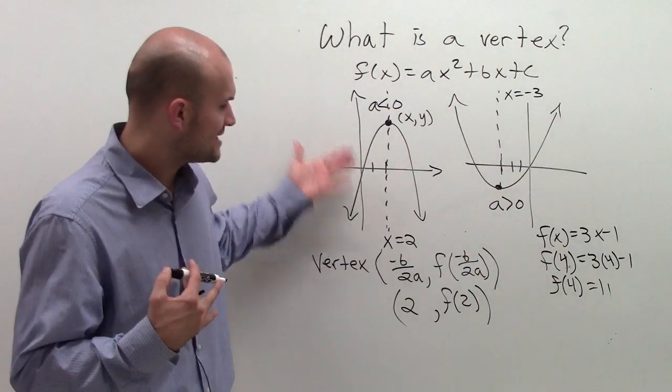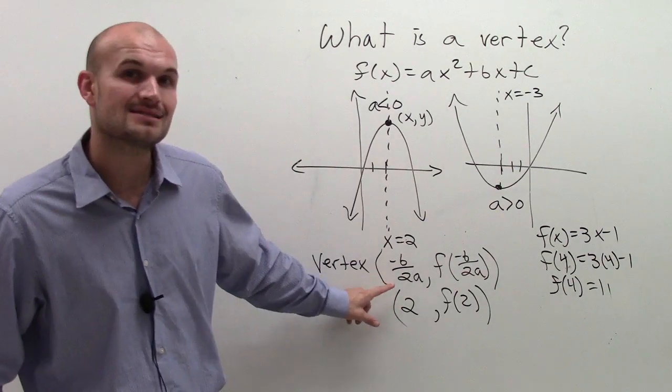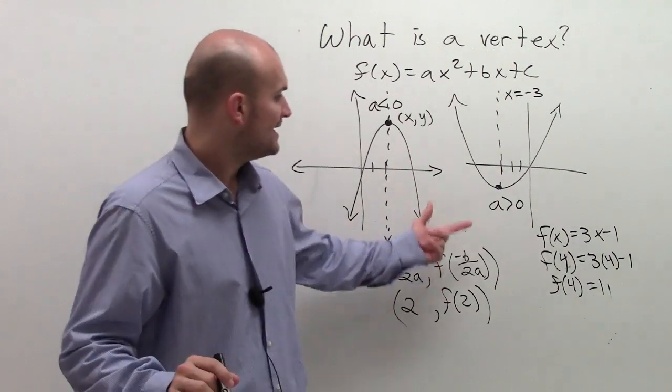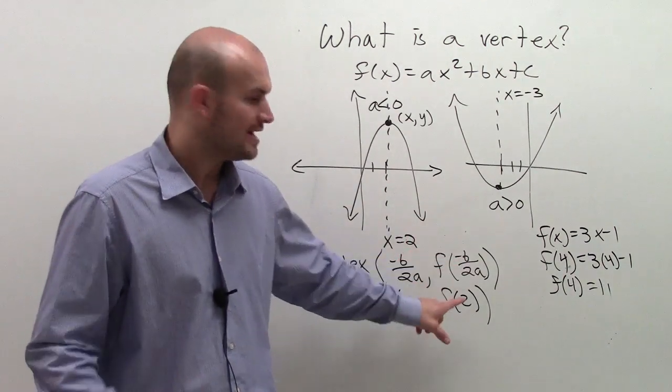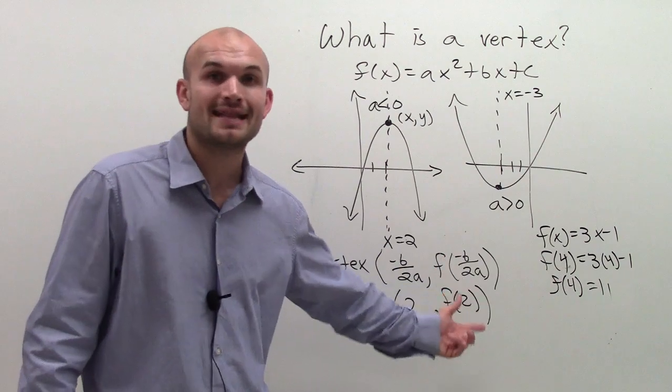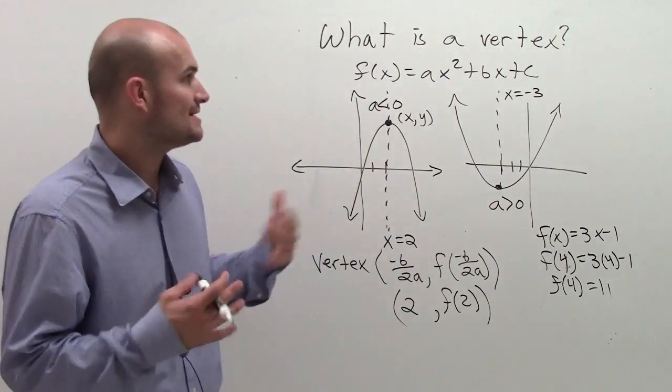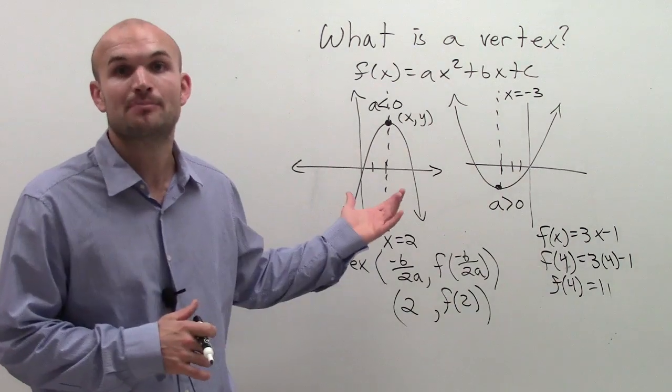But hopefully, you can see to find the vertex, you determine what the axis of symmetry is. That's going to be your x value. Then you plug that value into your function, and then find the value of your function at that interval to determine your y, or your output value. And that's how you can find the vertex for any parabola.